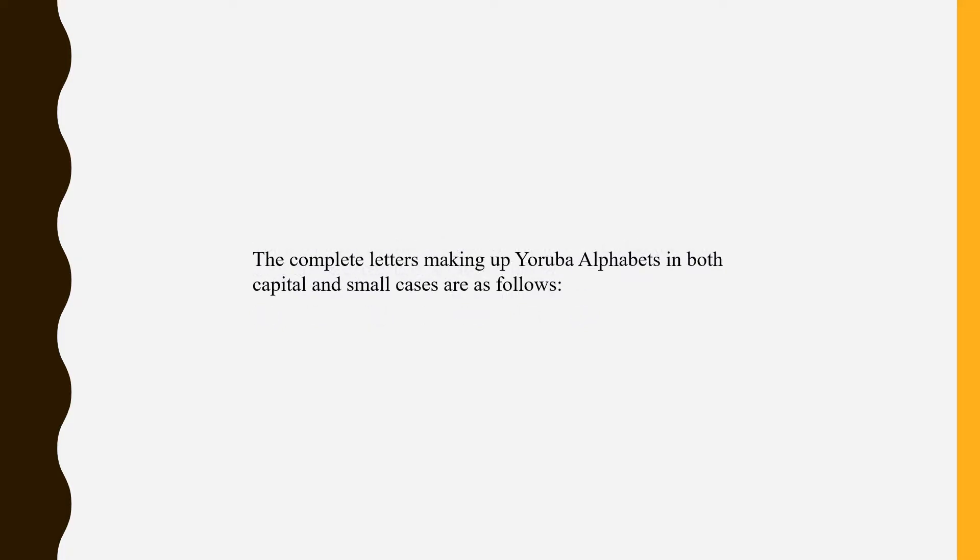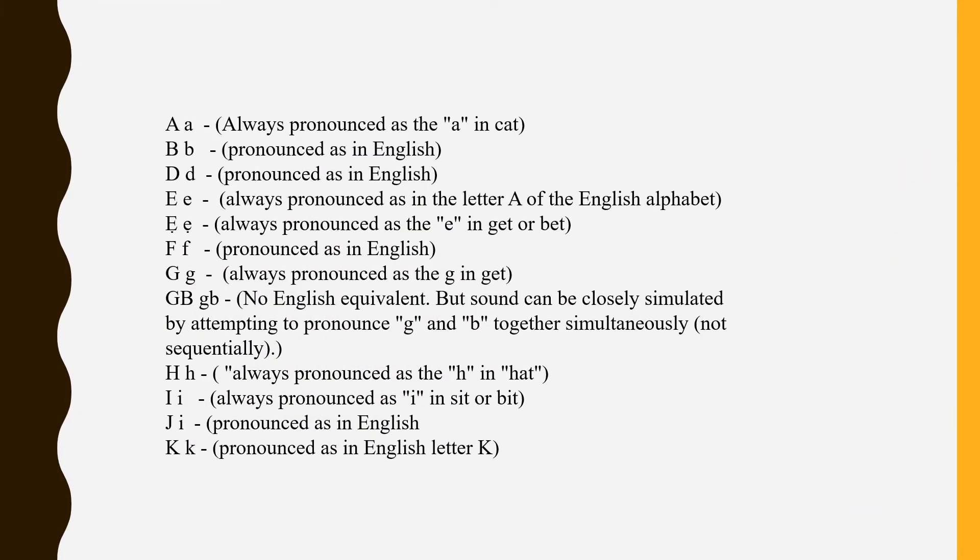The complete letters making up Yoruba alphabet in both capital and small letter cases are as follows. A, always pronounced as the A in cart. B, pronounced as in English. D, pronounced as in English.